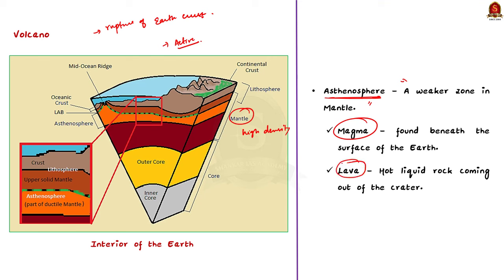The material that reaches the ground includes lava flows, pyroclastic debris, volcanic bombs, ash and dust. It also contains gases like nitrogen compounds, sulfur, and minor amounts of hydrogen, chlorine, or argon. Now, with these basics, let us see the classification of volcanoes.